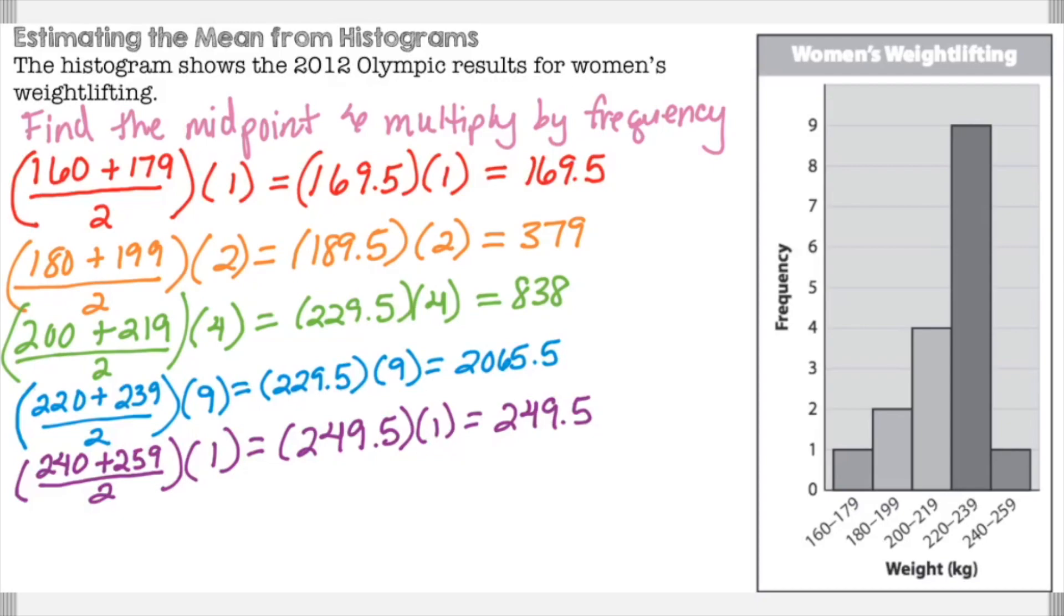Now to find the mean, you have to add them up and divide by how many there are. First, the frequency, how many are there? We add up one plus two plus four plus nine plus one is 17. Then we add up the answers and get 3,701.5. Now we take the mean of that. 3,701.5 divided by 17 gives us the estimated mean, which is 217.7.